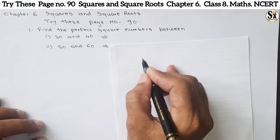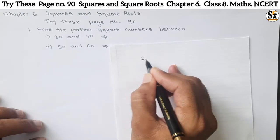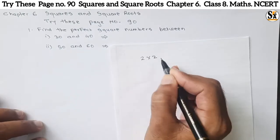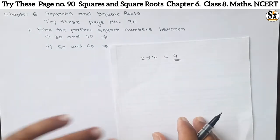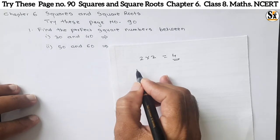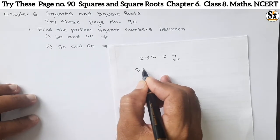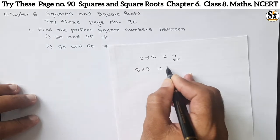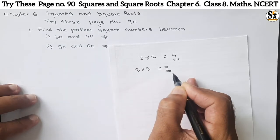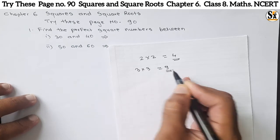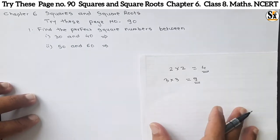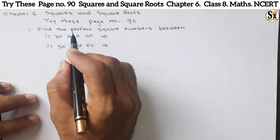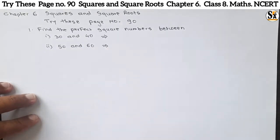We know what a square is. If we multiply each number two times — for example, two into two we get four, so four is a square number. Similarly, three into three we get nine, so nine is a square number. We get a square number by multiplying the same number two times.